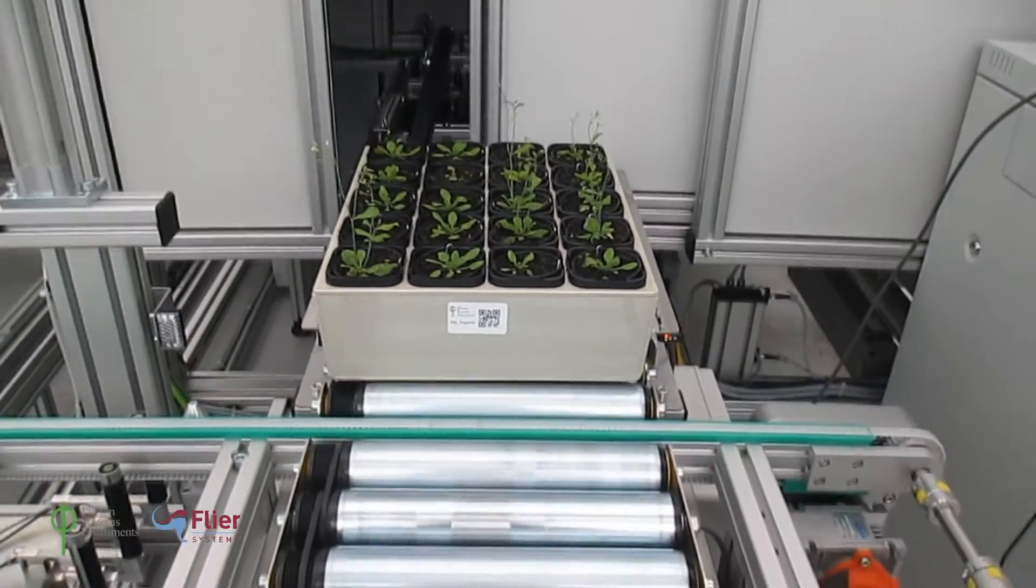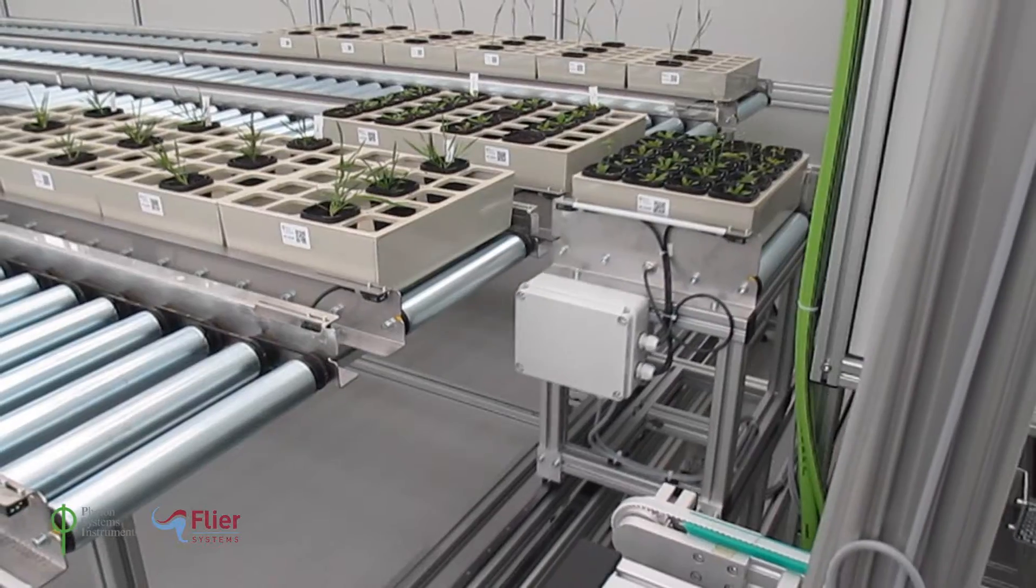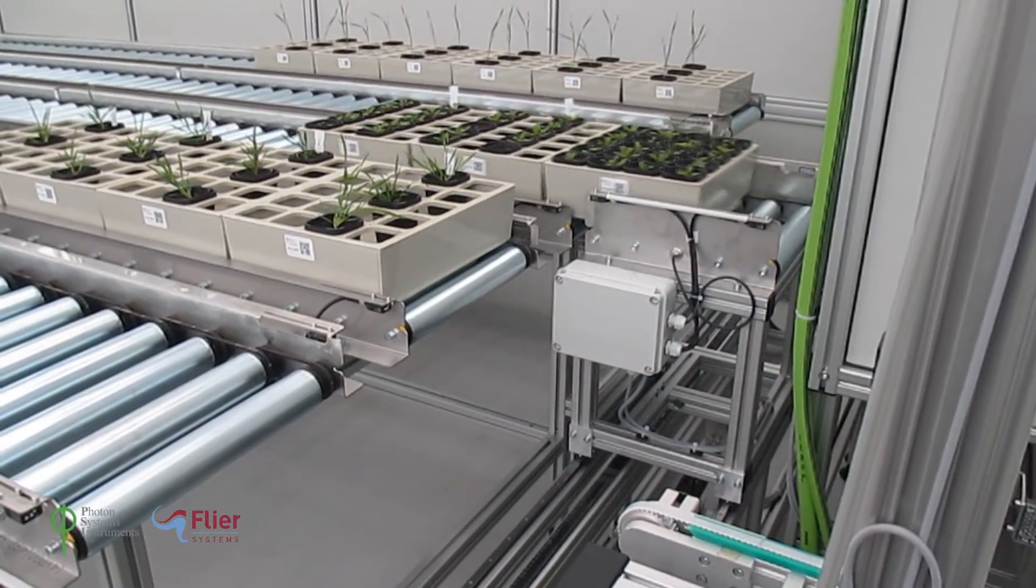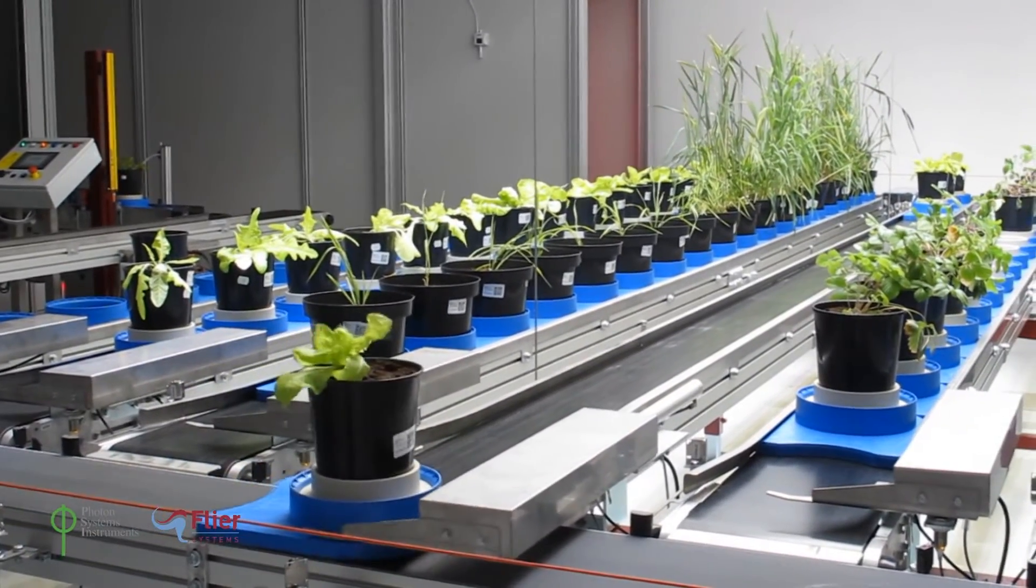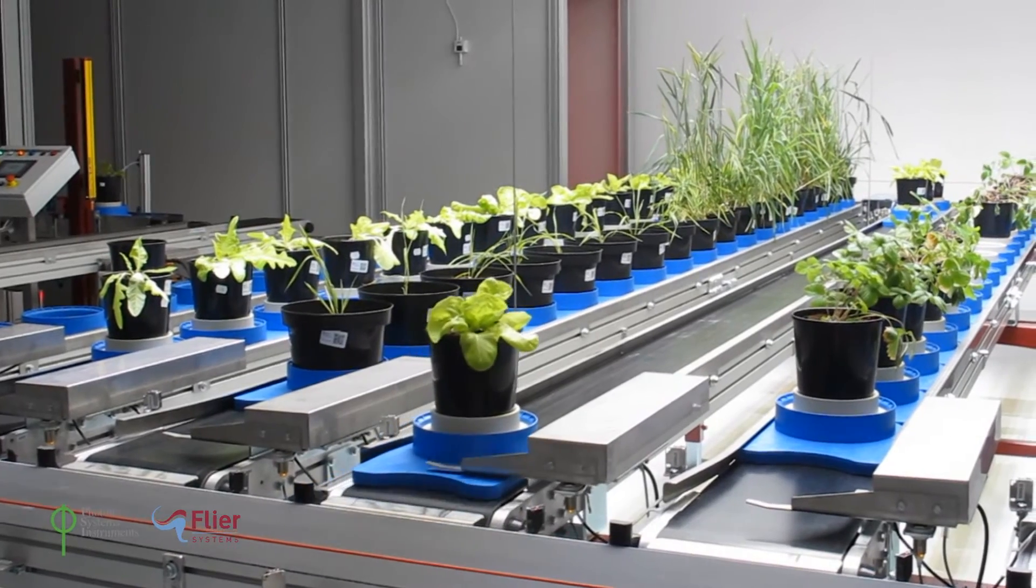PSI offers both small and large systems which may be connected to plants on a conveyor in a cultivation area. Systems can be optimized for the study of a wide variety of monocots and dicots from Arabidopsis to crop species.